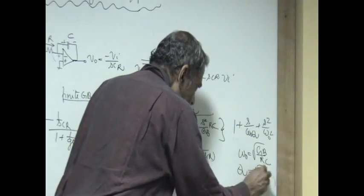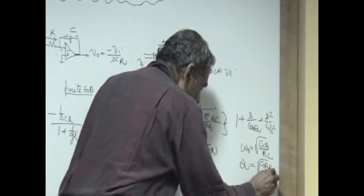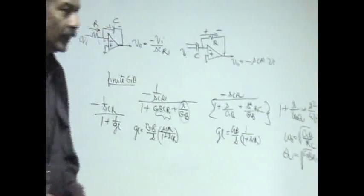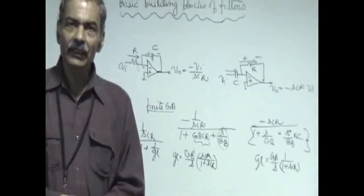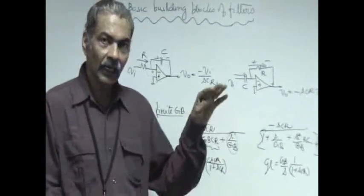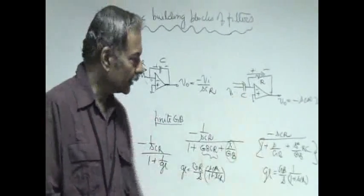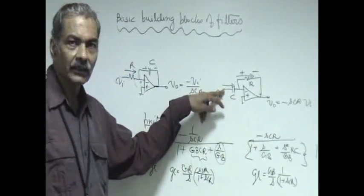This q is going to be omega naught into q equals g_b, so it is going to be g_b into RC. That means it will start ringing. It is going to be a system which is under-damped, and it will start ringing the moment there is a disturbance here.